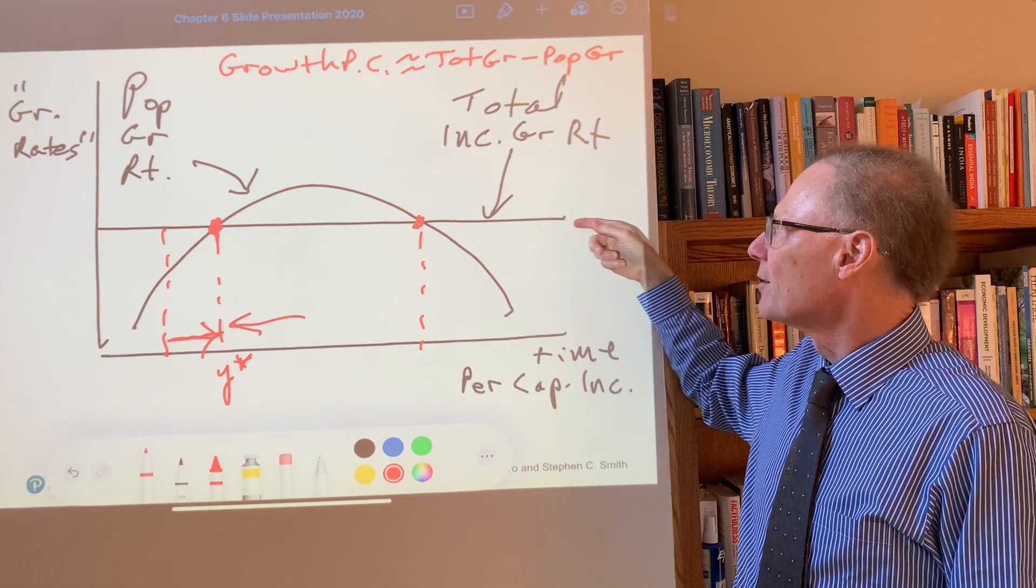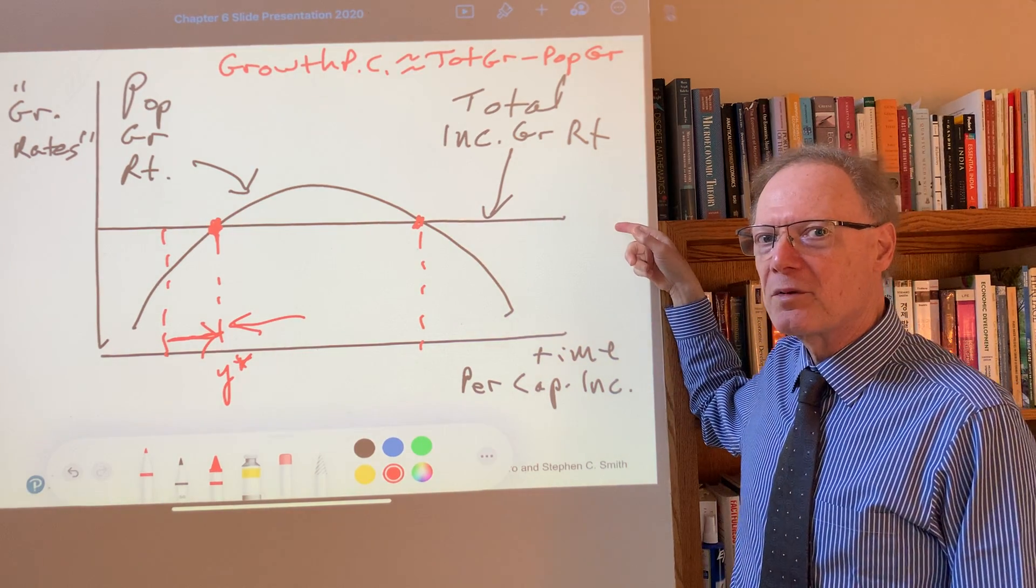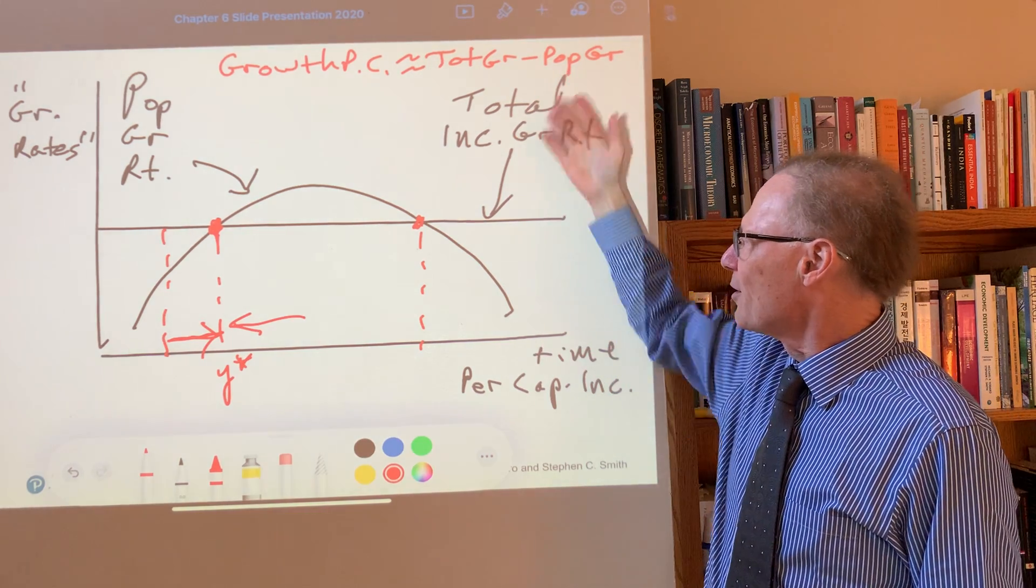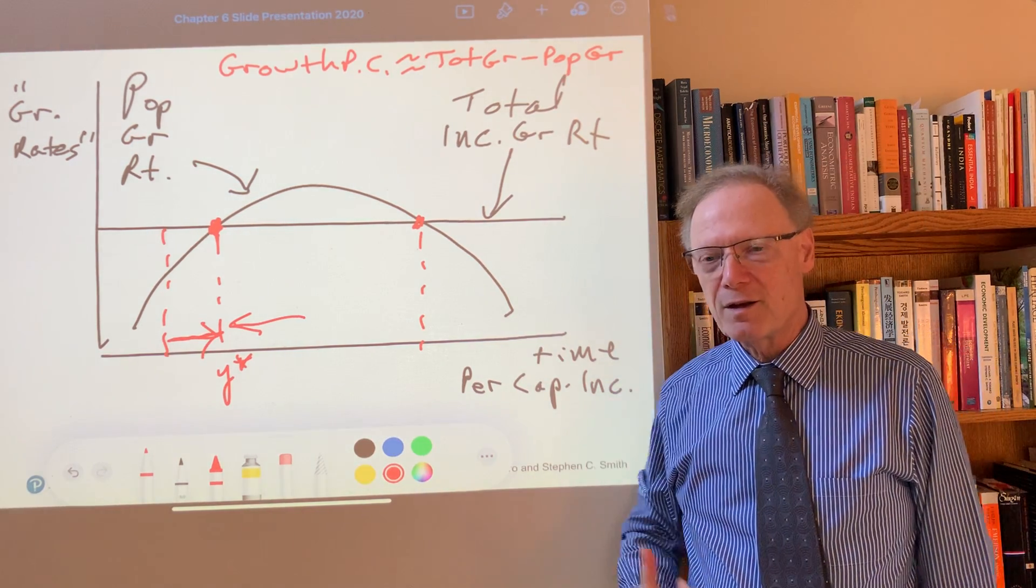Here, as drawn, the total income growth rate remains greater than the population growth rate, and so we could have an indefinite rise in per capita income.